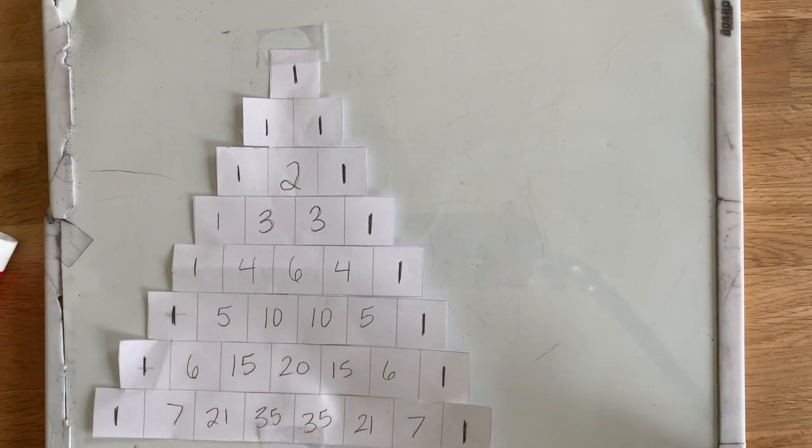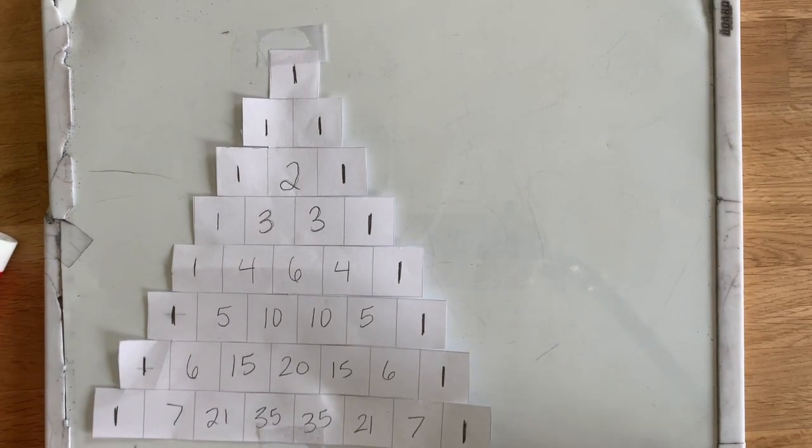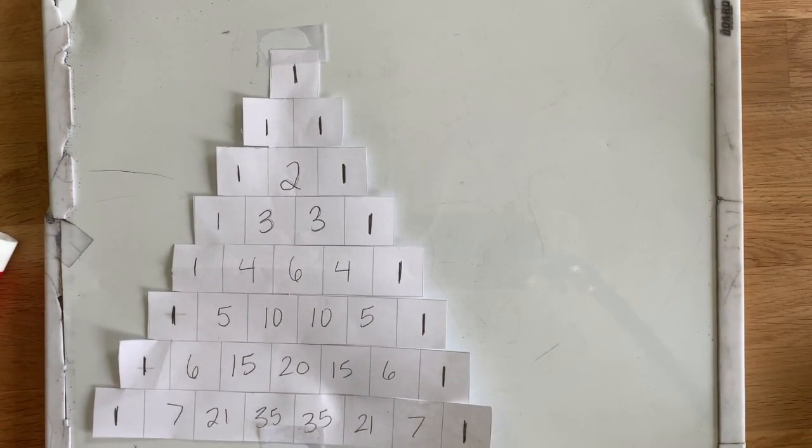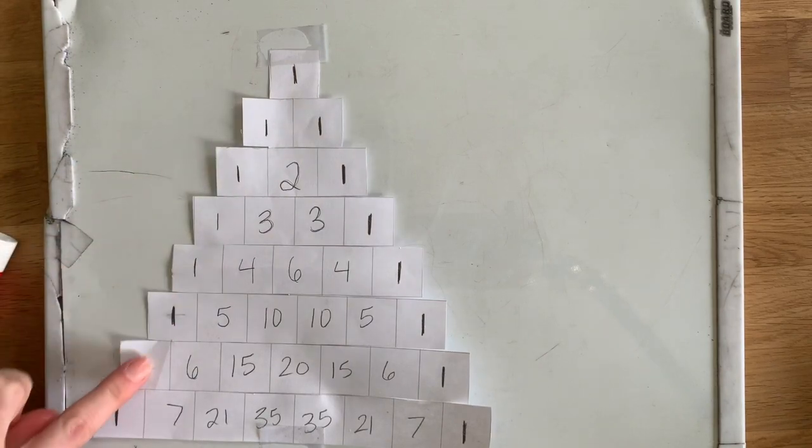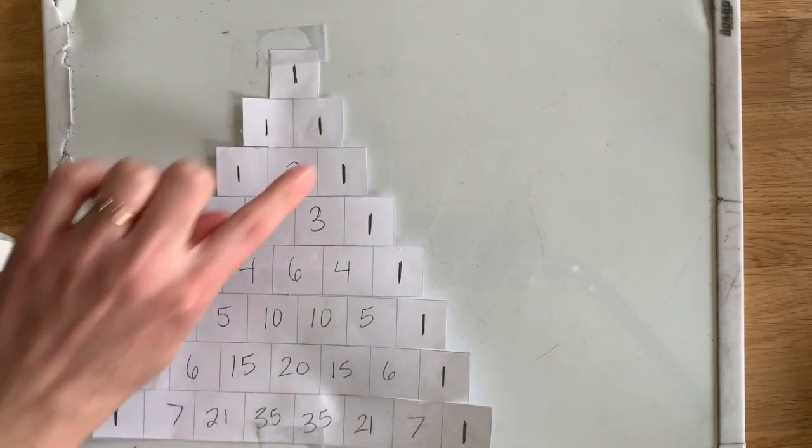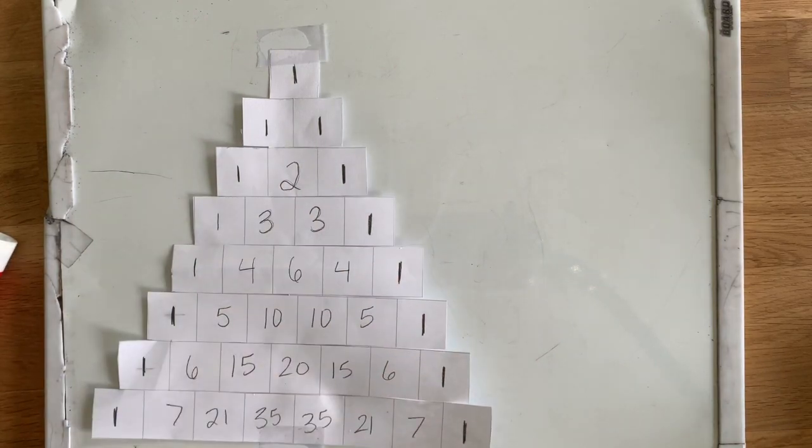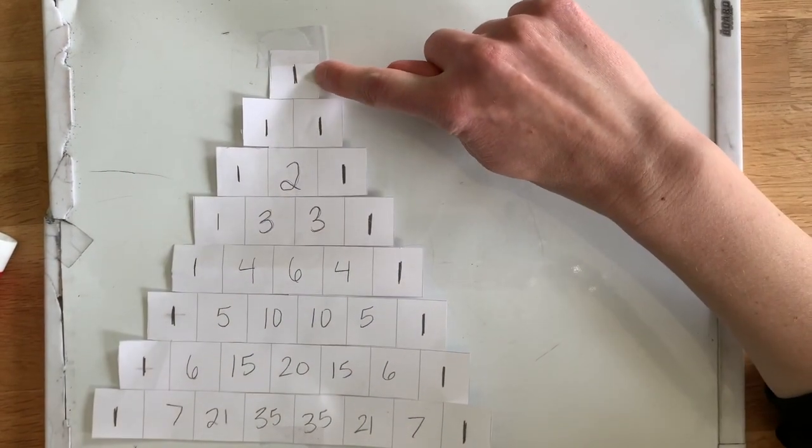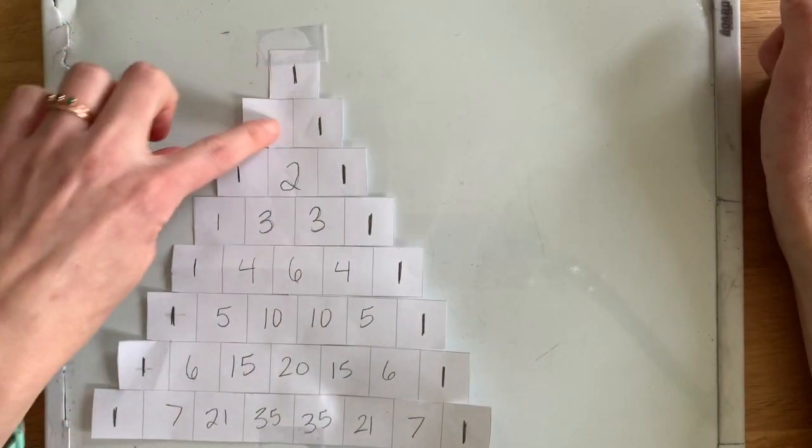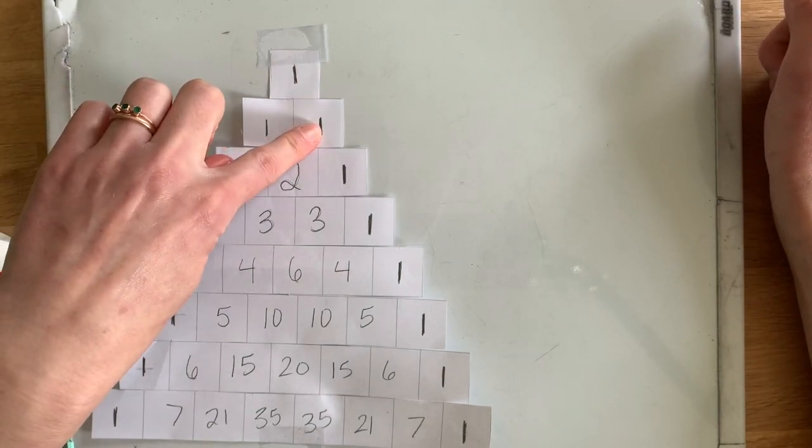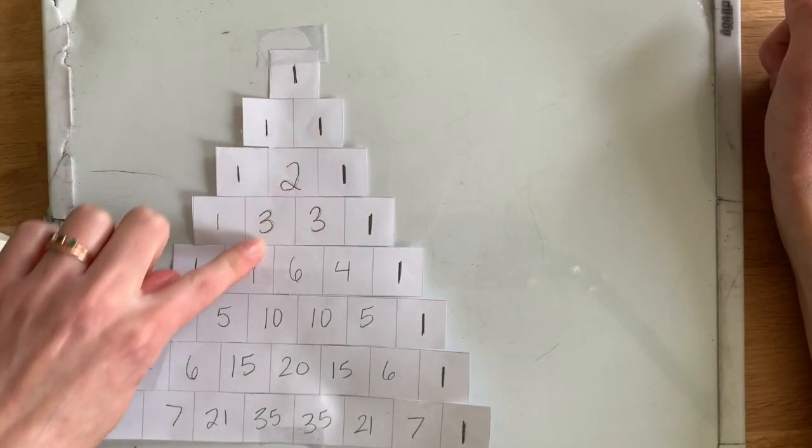So the first thing I want to show you with Pascal's Triangle are the patterns with the diagonals. So these are the diagonal rows going, they're slanting to the side.